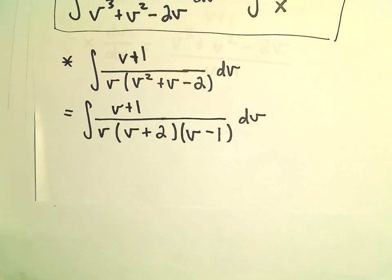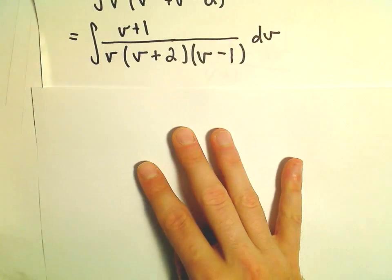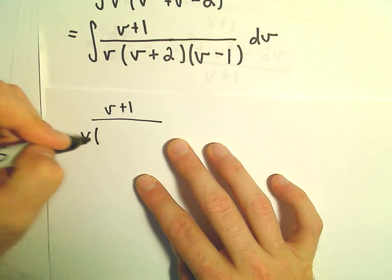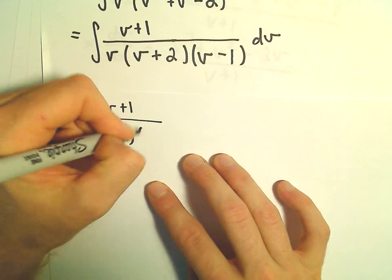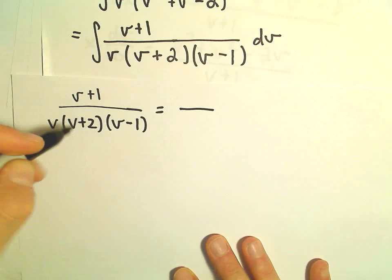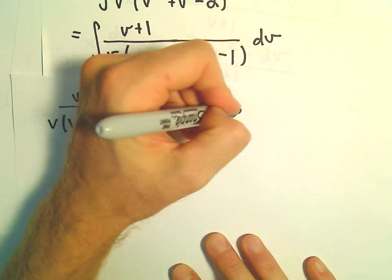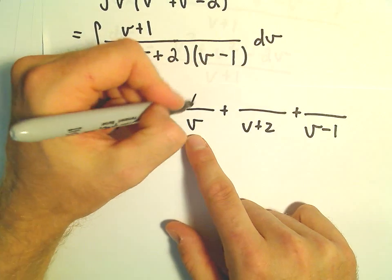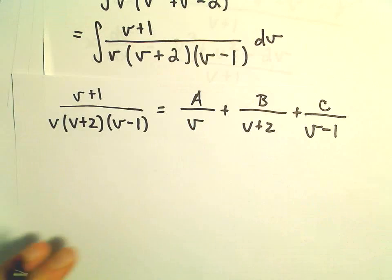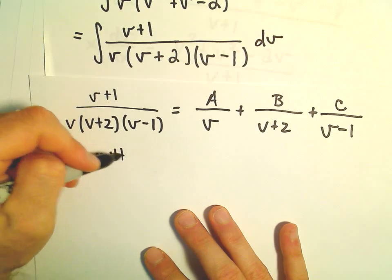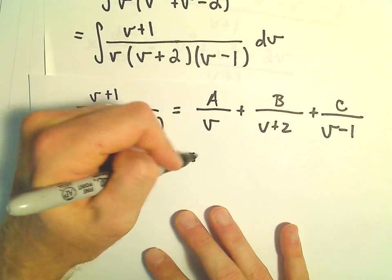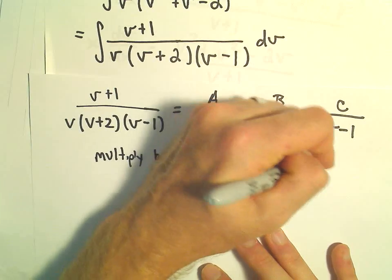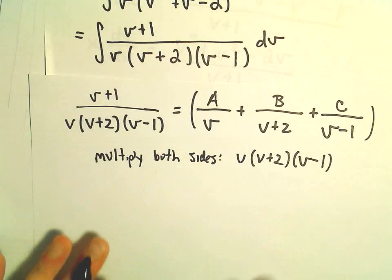We're going to do the partial fraction decomposition. So (v + 1)/[v(v + 2)(v - 1)] equals A/v + B/(v + 2) + C/(v - 1). Recall each factor gets its own fraction with constants A, B, C in the numerators. Multiplying both sides by v(v + 2)(v - 1), the left side simplifies to v + 1.